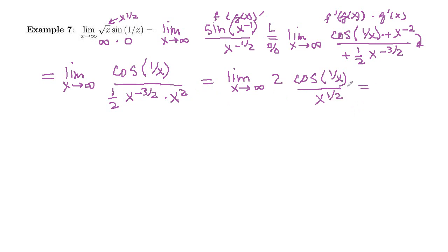And so now what happens? Well, x is going to infinity, so this cosine 1 over x is going to 0. Cosine of 0 is 1 times 2 is 2, so the top's approaching a number. And then as x goes to infinity, x to the 1 half also goes to infinity. So number over infinity, that limit is 0.